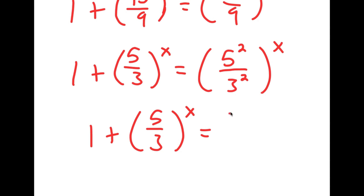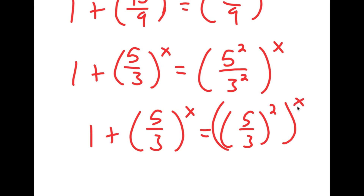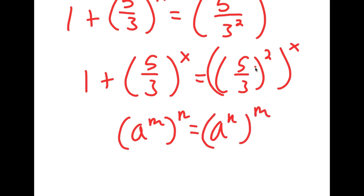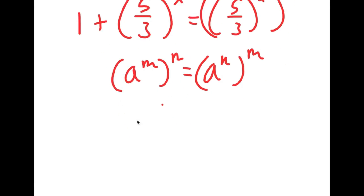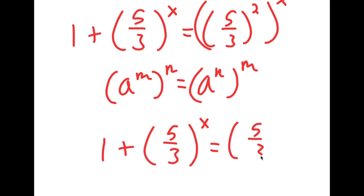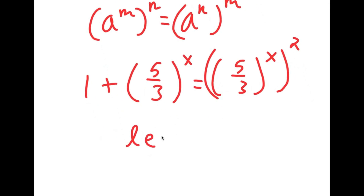So 5² over 3² equals (5/3)². Now I have this to the power of x. If I have (a^m)^n, that's the same as a^(mn). So (5/3)² to the power of x is the same thing as (5/3)^x squared.